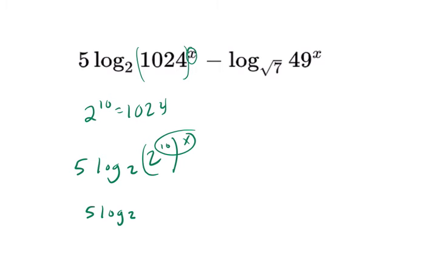I have 5 times the log base 2 of 2 to the 20x. And then I have another law that says I can take this exponent and bring it down in the front. So I get 20x times 5 times the log base 2 of 2. And what does that equal?